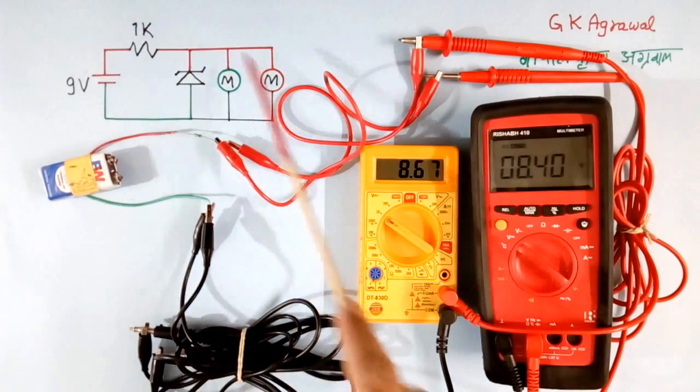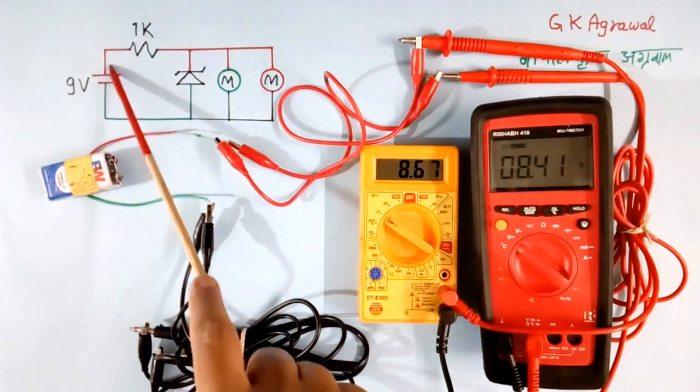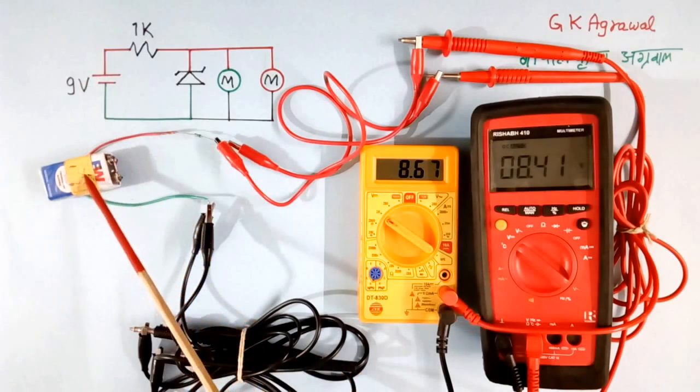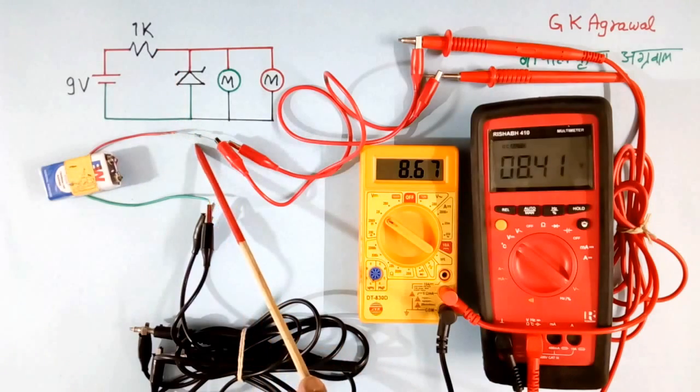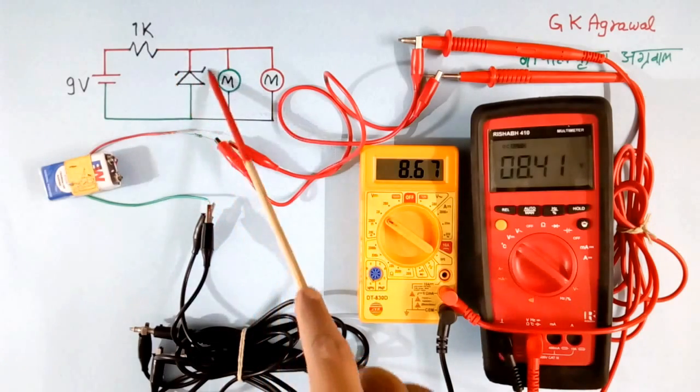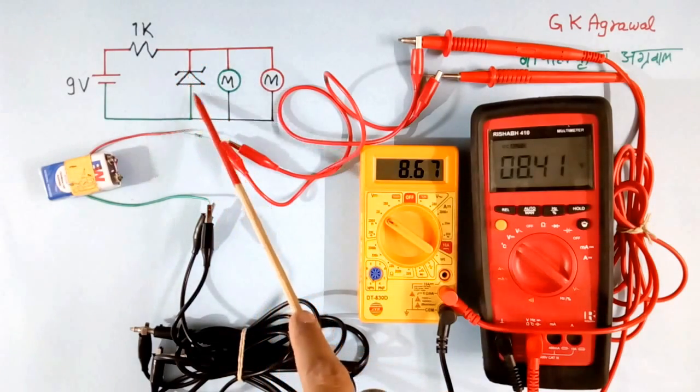This is a simple circuit. This is a 9V battery, which is this one. This is a 1 kilo ohm resistor, which is this one. This is a Zener diode. This is the anode, this is the cathode.